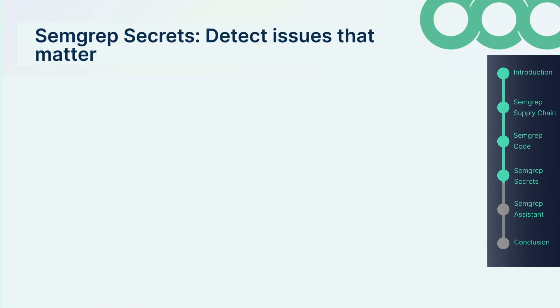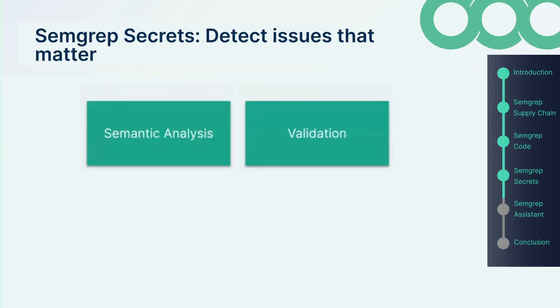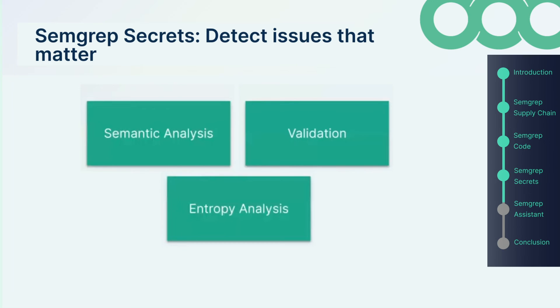Semgrep Secrets takes a three-pronged approach to detecting the issues that matter: semantic analysis, secret validation, and improved entropy analysis.